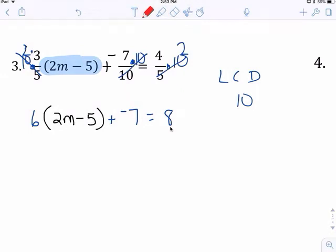Distribute. 6m. I mean 12. Oh my gosh, so sorry. 12m. Negative 30. Add 7. Negative 7, 8. You finish the rest.